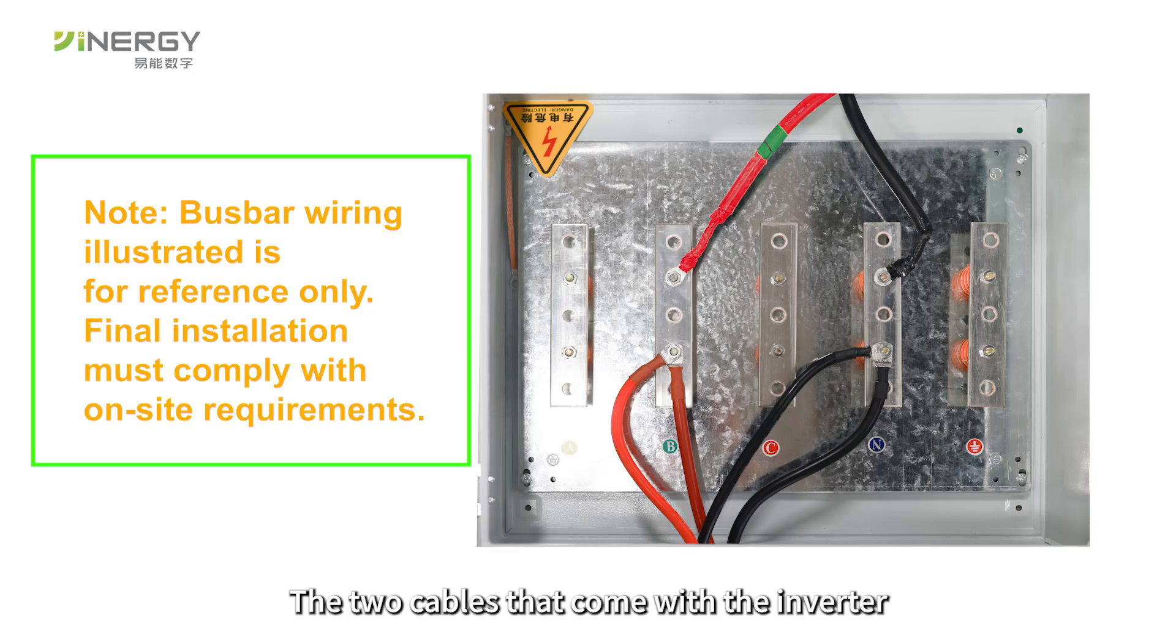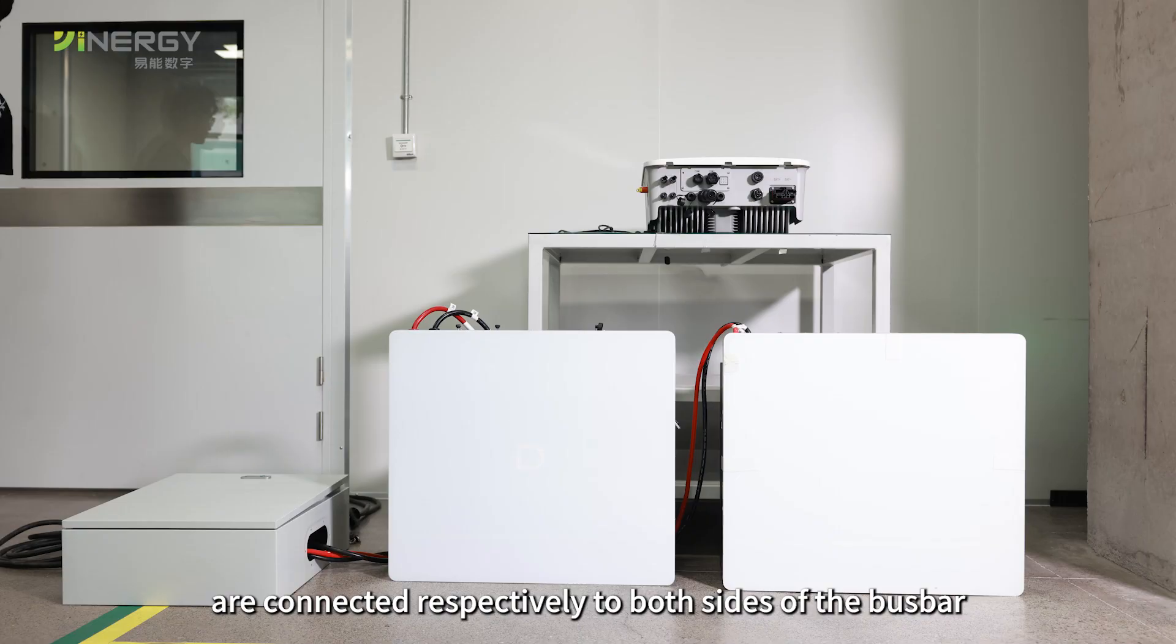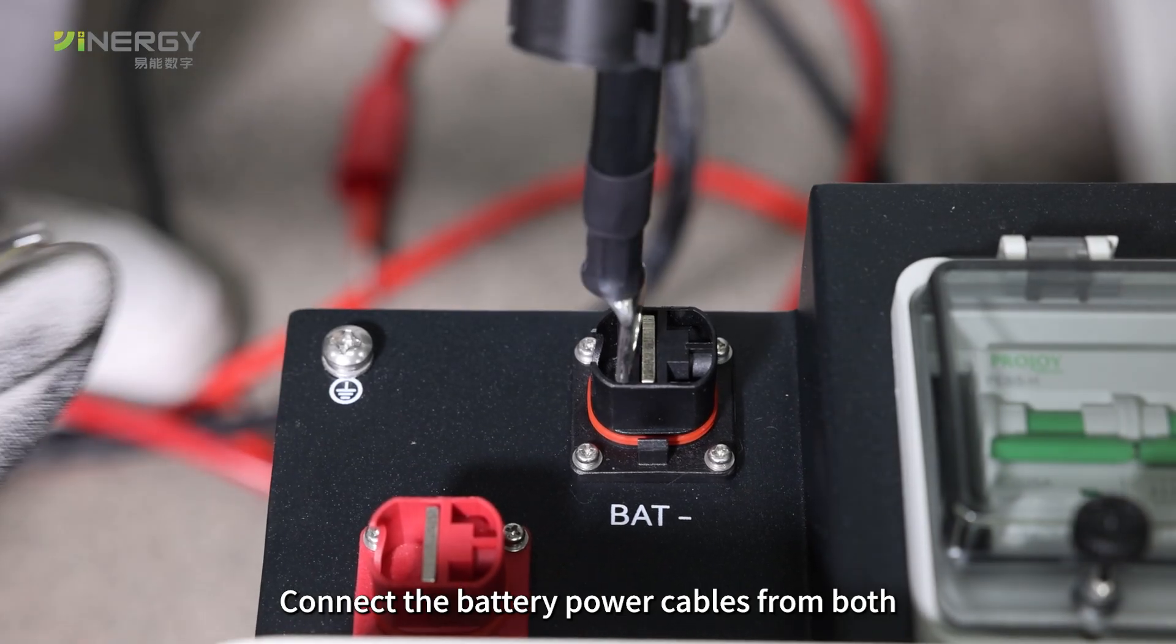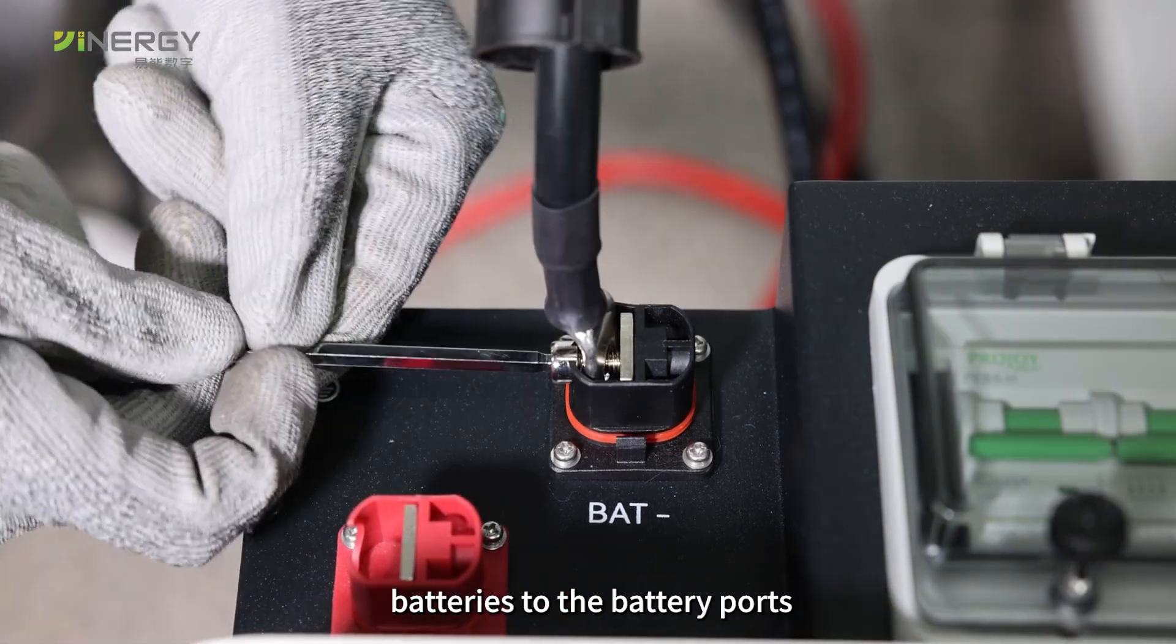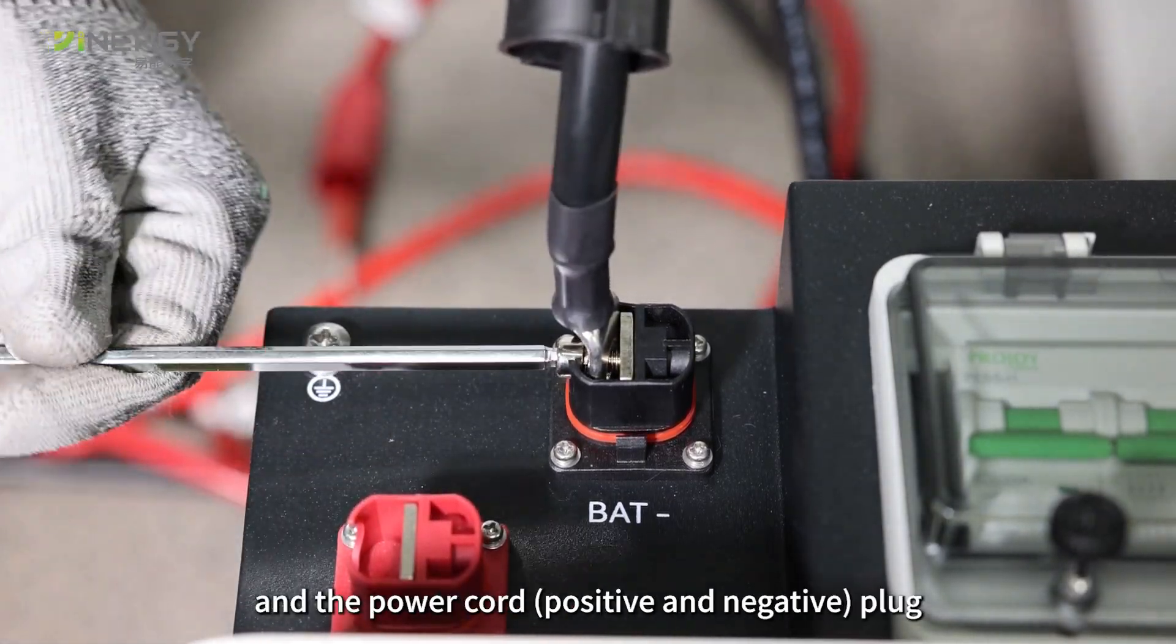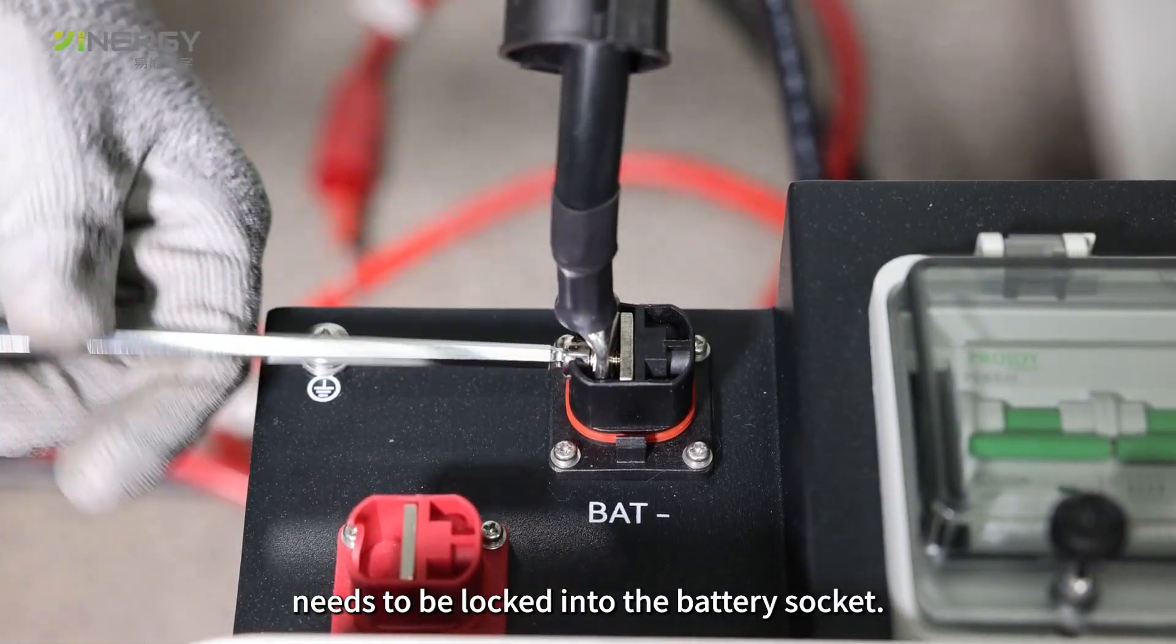The two cables that come with the inverter are connected respectively to both sides of the bus bar. Connect the battery power cables from both batteries to the battery ports, and the power port plug needs to be locked into the battery socket.